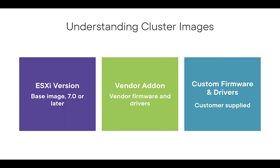Let's understand the components of an image in the new deployment type. There are three components. First is the ESXi version — the base version image, for example 7.0 and later. This functionality is only available in version 7. Second is vendor add-ons, which are specific to vendors such as Dell, HP, or Lenovo — firmware and drivers you install on top of the base ESXi hypervisor.